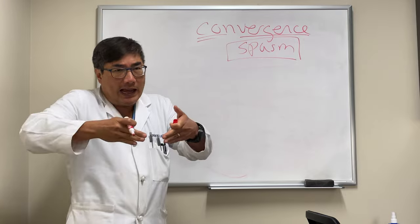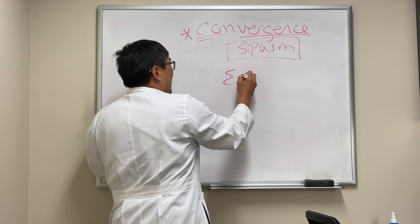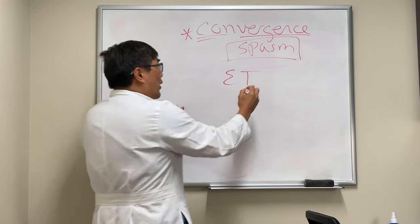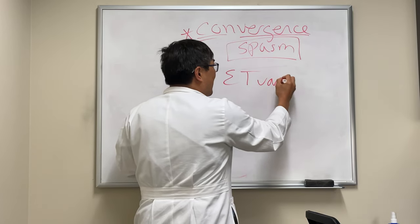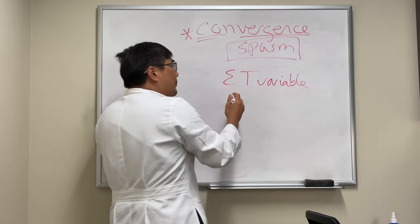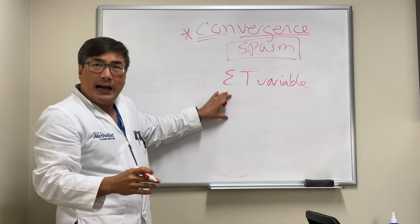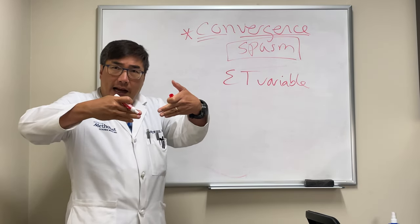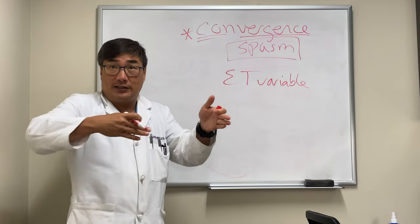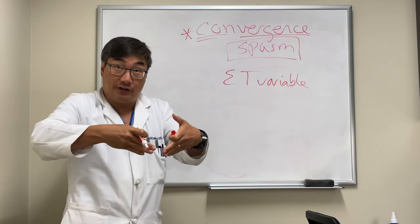When that happens, the convergence spasm causes an esotropia. That esotropia is quite variable because it's hard to maintain the convergence, and it causes an incomitant esotropia. The eye is crossed in, and it's going to be worse on lateral gaze because they can't abduct — because they're converging.